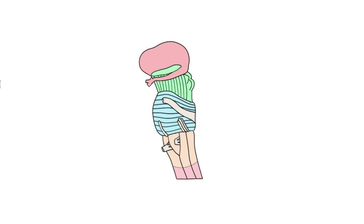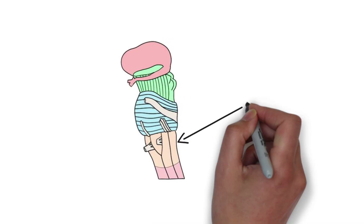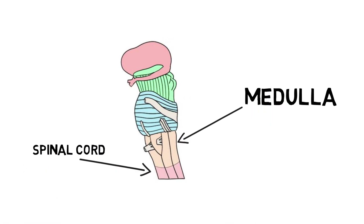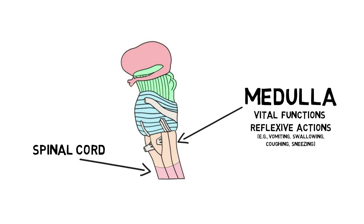The medulla oblongata, often simply called the medulla, is the point where the brainstem connects to the spinal cord. The medulla is essential for survival as it contains nuclei that ensure vital systems like the cardiovascular and respiratory systems are working properly. The medulla also contains nuclei responsible for a number of reflexive actions, including vomiting, swallowing, coughing, and sneezing. Several cranial nerves also exit the brainstem at the level of the medulla.